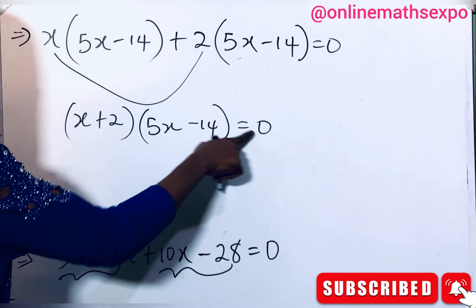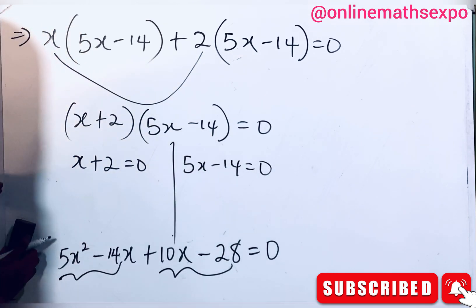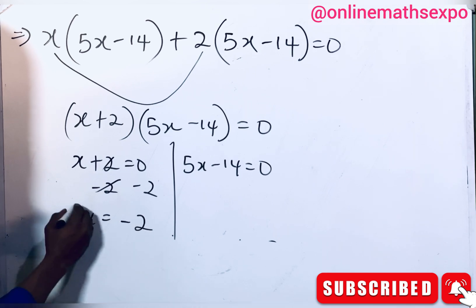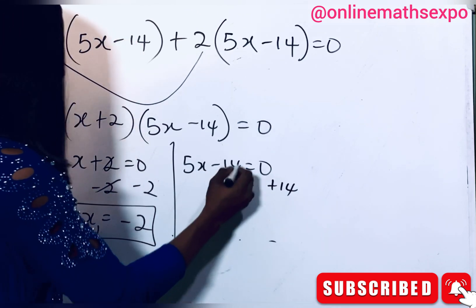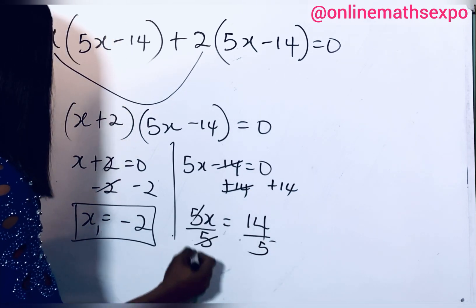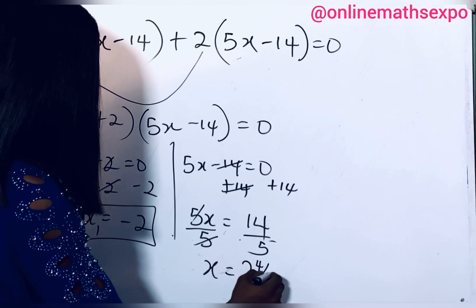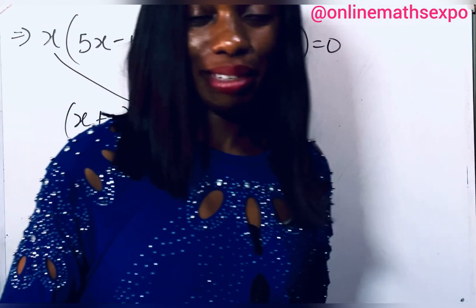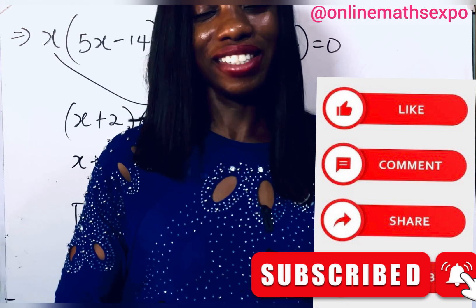Either x + 2 = 0 or 5x − 14 = 0. From the first: x = −2. From the second: 5x = 14, so x = 14/5, which is 2 and 4/5. These are the two values of x. I hope you learned a lot — let us know in the comments, share to help others learn, and see you in the next class!